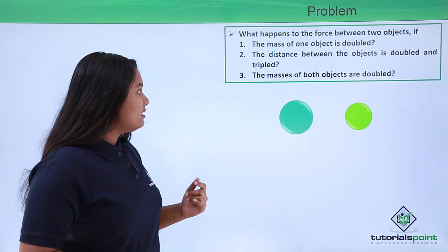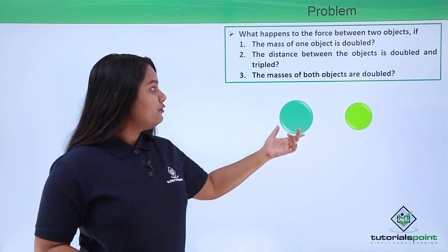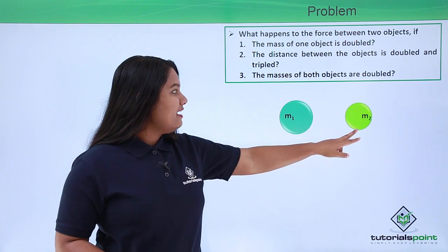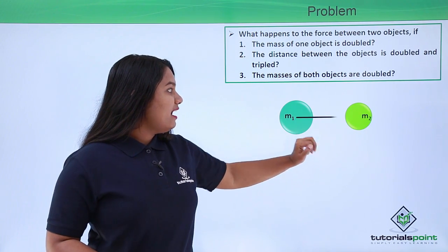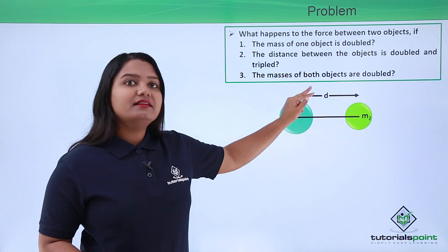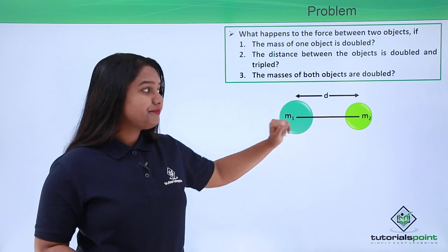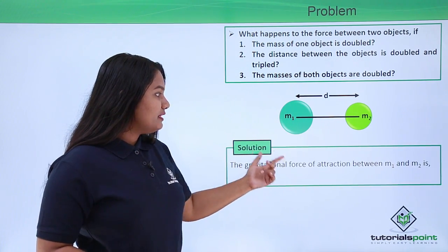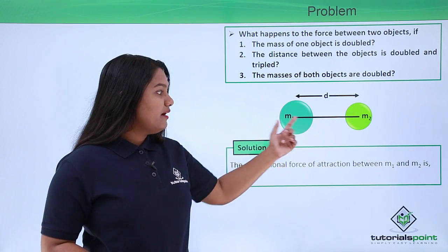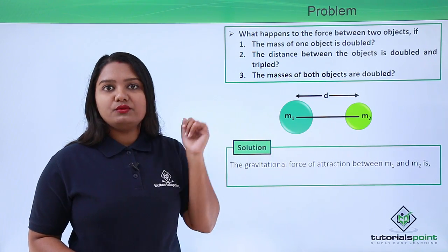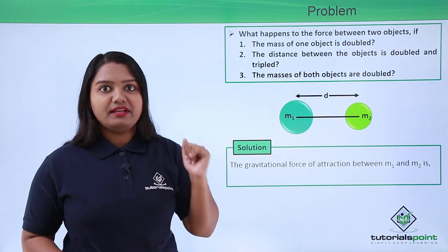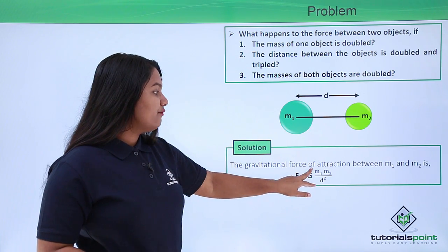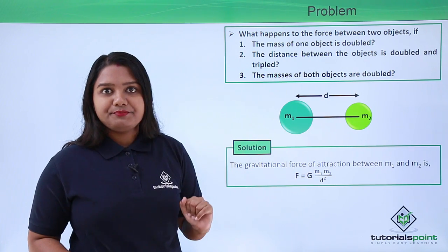Let us do that first. Let's have two bodies with masses M1 and M2 and their distance of separation be d. The gravitational force of attraction between M1 and M2 is given by the universal law of gravitation, which is F equals G M1 M2 by d squared.